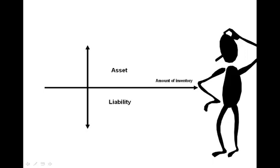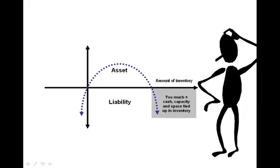When we say asset, we don't mean it in a balance sheet perspective. Instead, we are saying that it is available in the right place in quantity to satisfy demand. Where the two axes intersect, the quantity is zero. As the amount of inventory grows, it becomes a liability as the amount of cash, capacity, and space tied up in the inventory grows. Conversely, as the amount of inventory shrinks, it also becomes a liability due to stockouts, back orders, expedites, and missed sales.